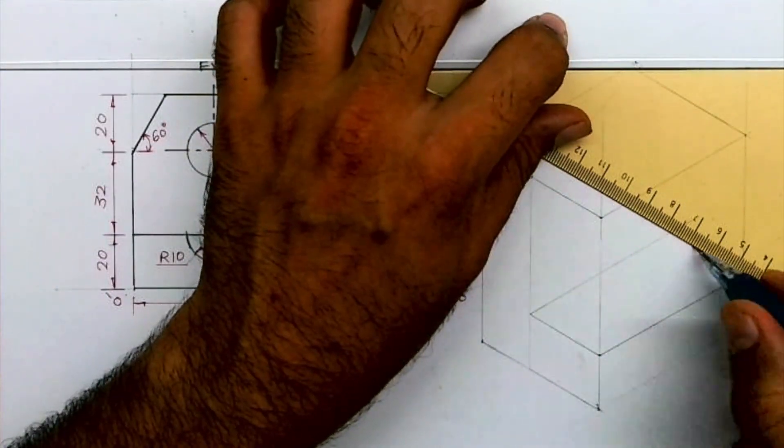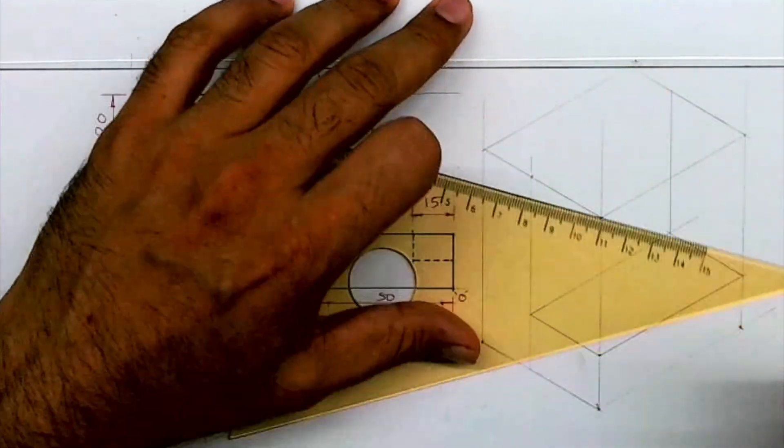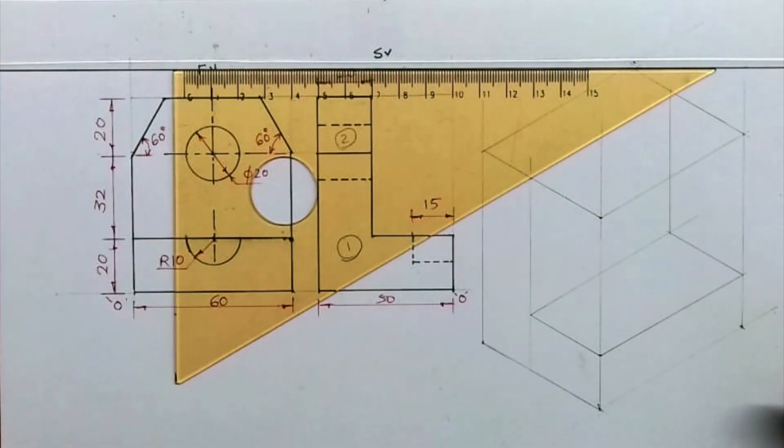See, if you don't want to mark 60, you can mark this way also. This is how you will get L shape.